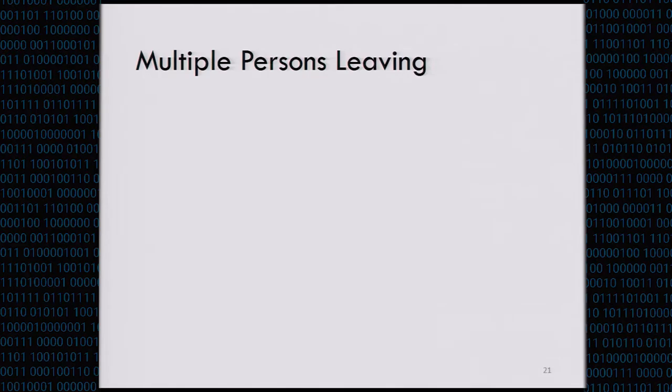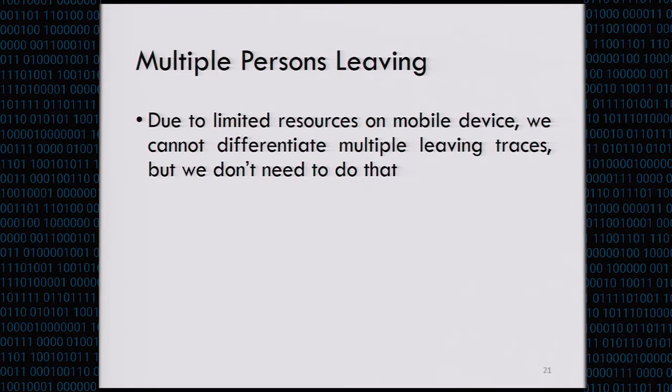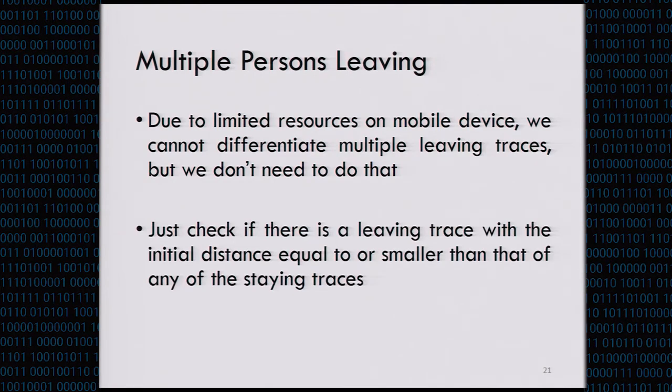Then we consider the multi-person leaving case. Since there are limited resources with our mobile devices, we cannot differentiate the multiple leaving traces, but we don't need to. The basic idea is to check if there is a leaving trace with the initial distance being equal to or smaller than that of any of the staying traces. If this condition holds, then we decide to lock the device.